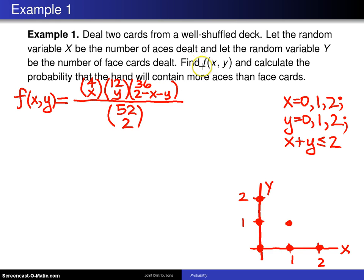Now, the second thing we want to do after we find f(x,y) is we also want to calculate the probability that the hand will contain more aces than face cards. That is to say, we want the probability x, which is the number of aces, is greater than the number of face cards. By the way, this is equivalent to the event capital A, which we saw more generally on the previous slides.